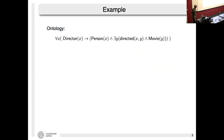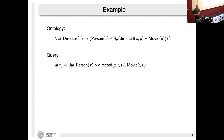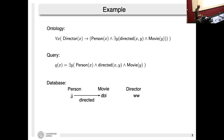Let me jump into a concrete example from the domain of movies. Here's a very simple toy ontology consisting of one first-order sentence: if something or somebody is a director, then he or she is a person who directed a movie. We also take a query — give me all persons who directed a movie — and a database where Jim Jarmusch is a person who directed a movie, and Wim Wenders is also a director.